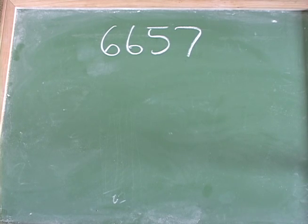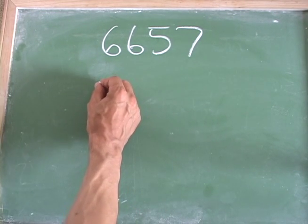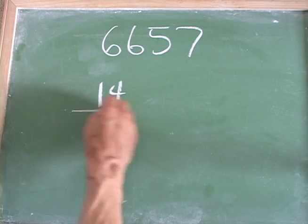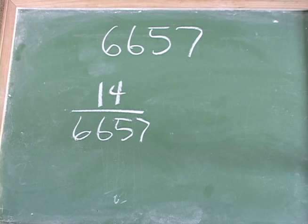So we're going to take a look at this number here, 6657, to determine if it's divisible by 7. And before we get into that, some of you might ask, why would I want to know if a number is divisible by 7?